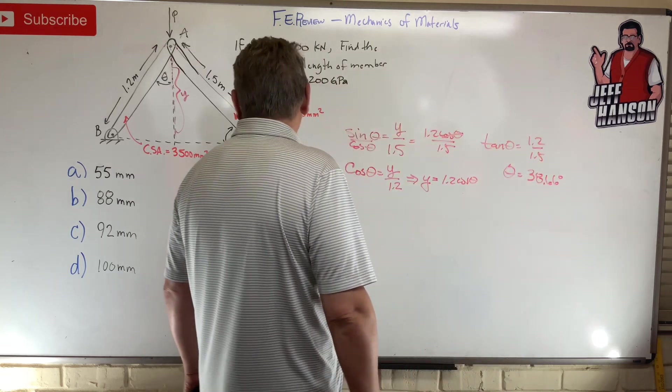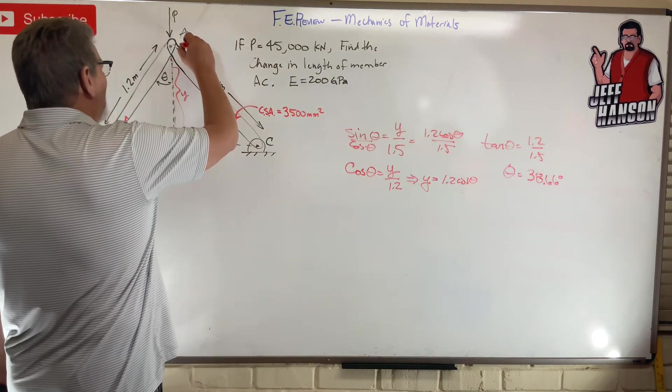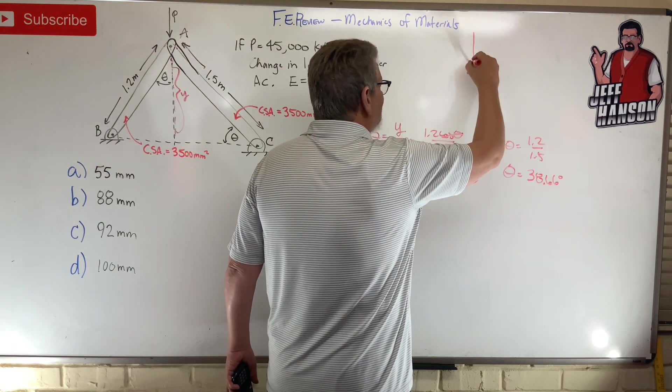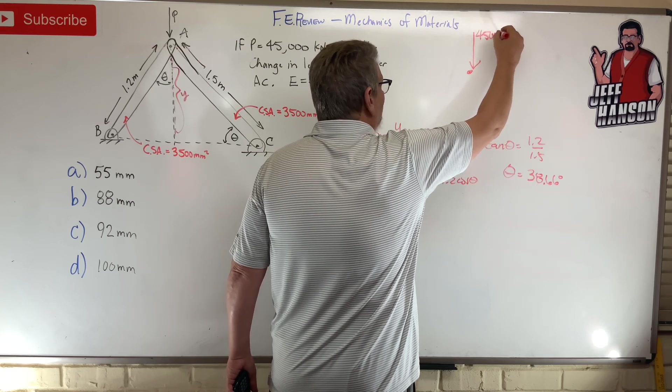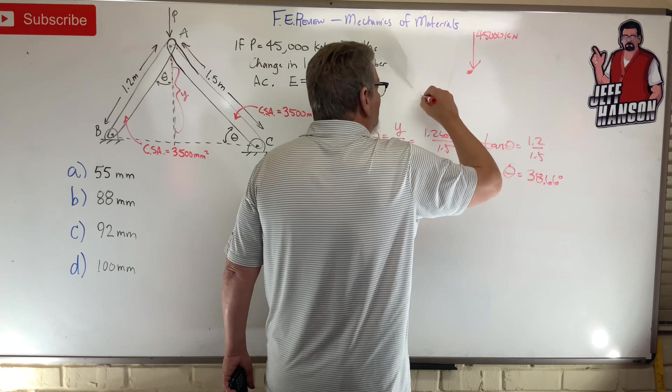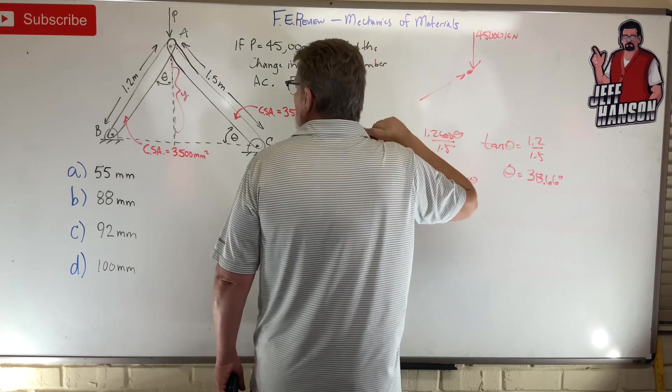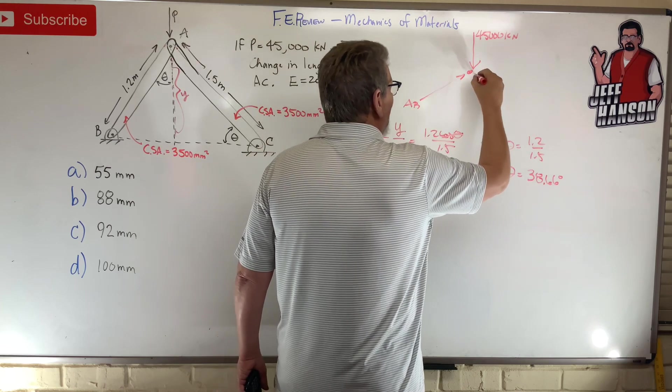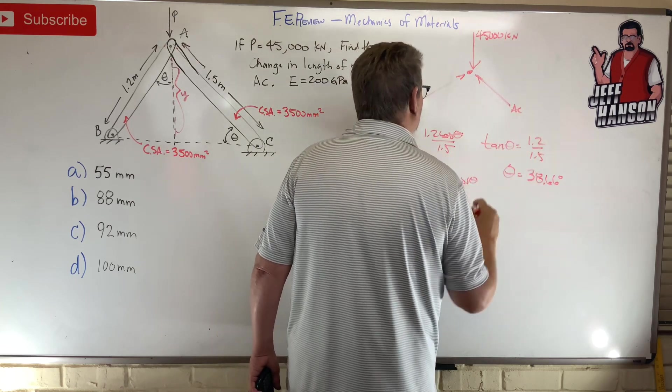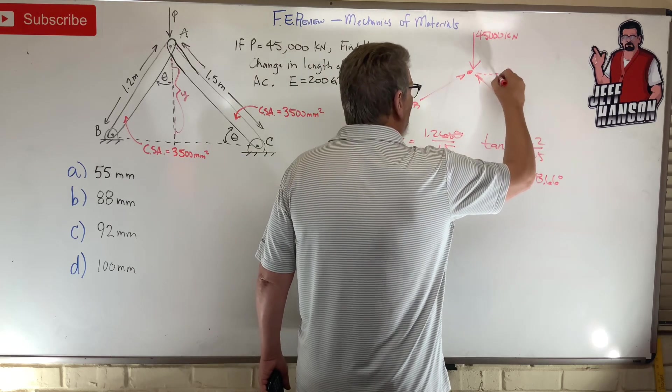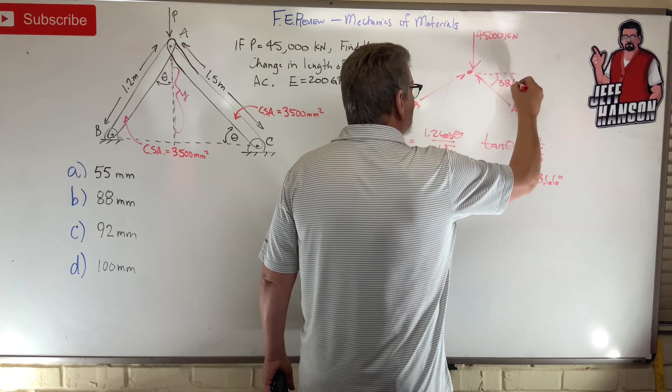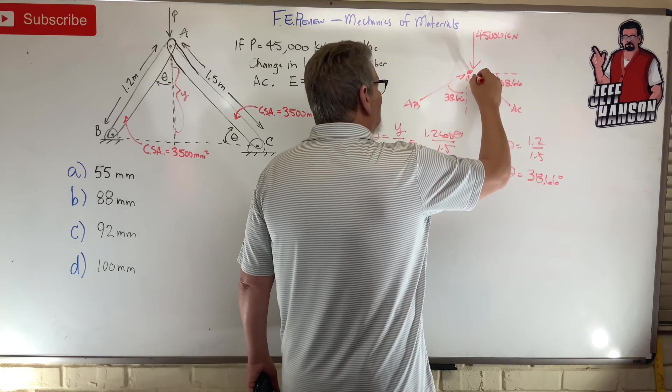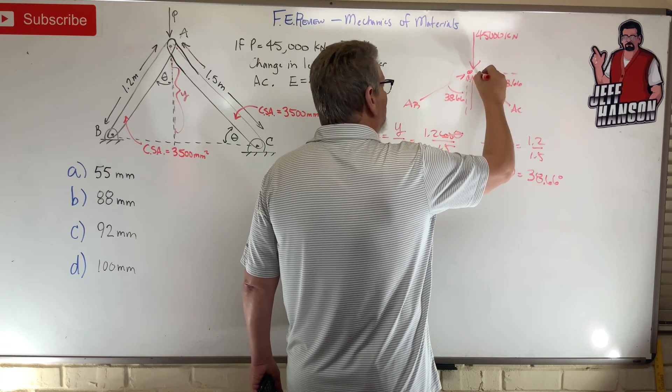Okay, so I know, let's draw a free body diagram. I know that this guy, there's 45,000 kilonewtons. These are in kilonewtons. This guy is AB, and then this guy is AC. And so this angle right here, 38.66. This angle right here, 38.66. So I've got components here, here, here, here, here, and here.